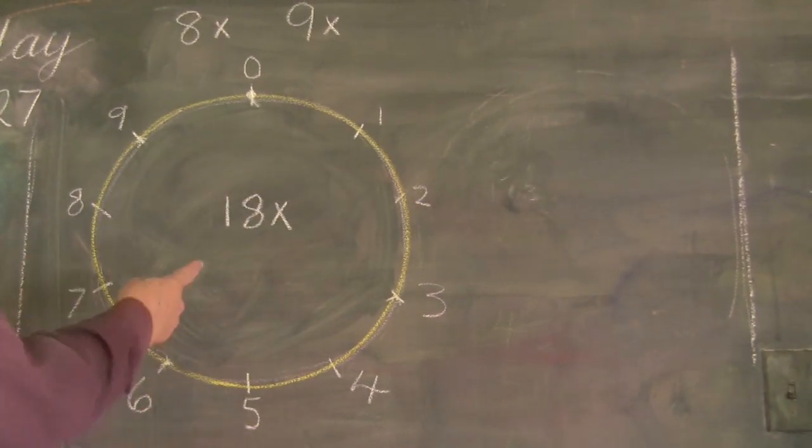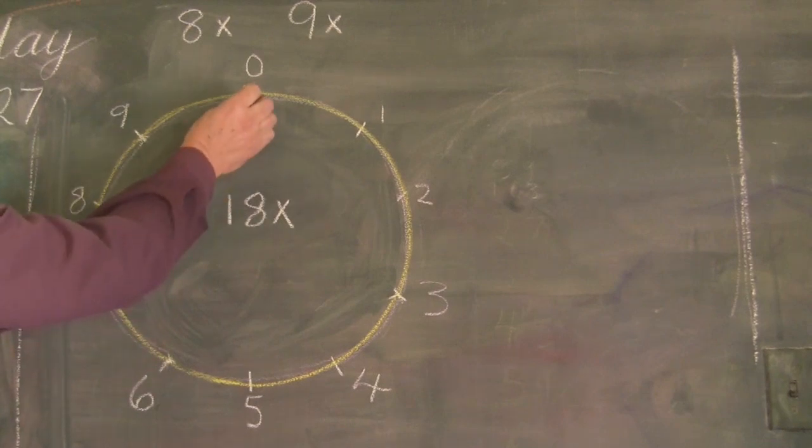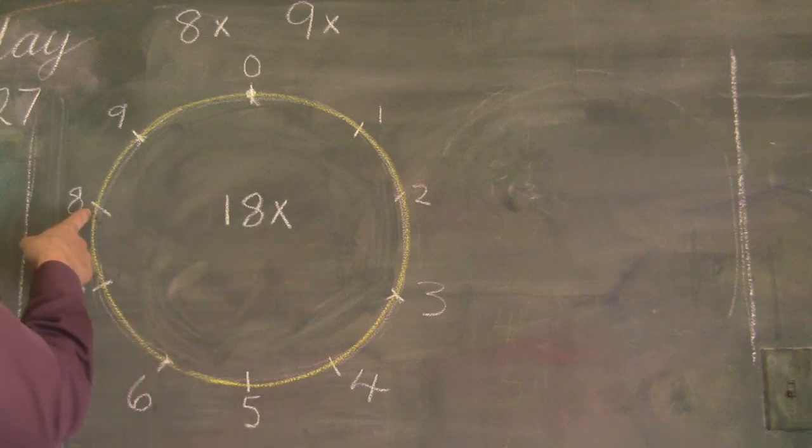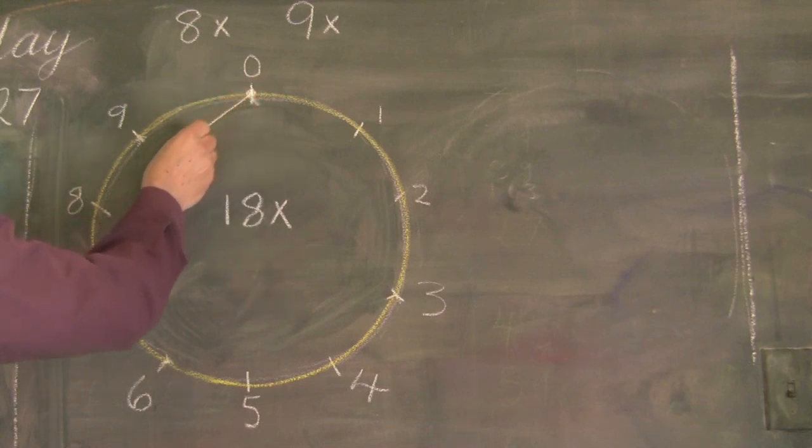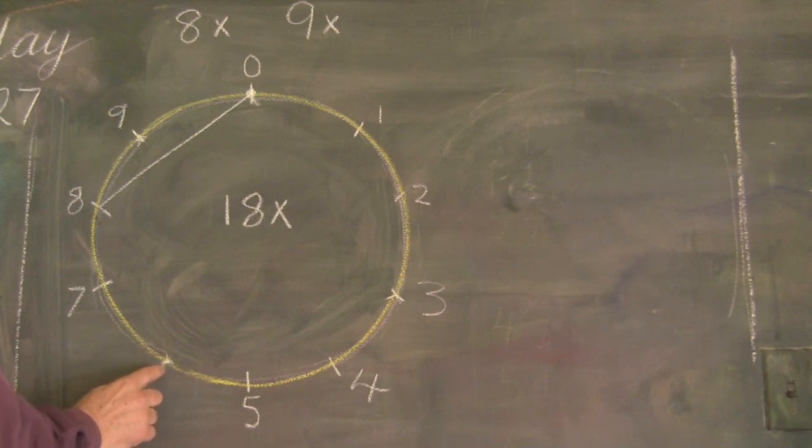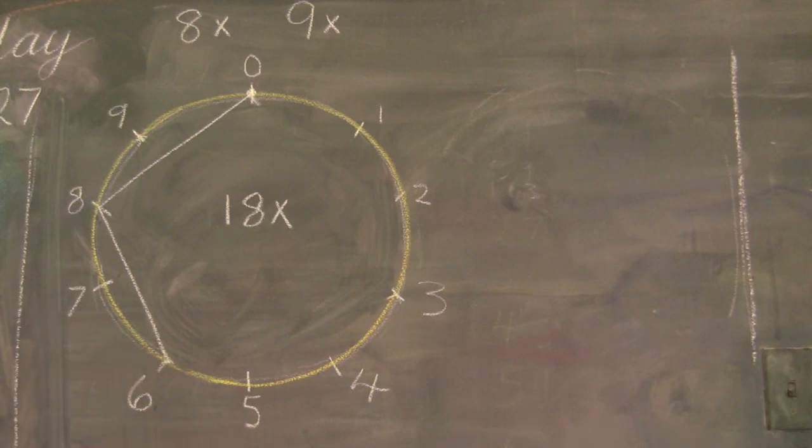If you want to know the 18 times tables, well 0 times 18 is 0. So we're starting at the 0. Which way to go? Here's something, 18. Let's head this way. We're crossing by just one number now. So that means the next one in the sequence has to be down here at the 6. So 2 times 18 is 36.